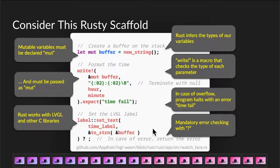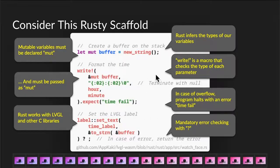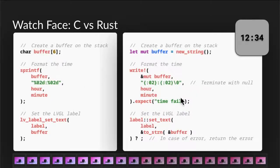Notice that we actually don't specify the types of variables. We don't say whether it's a char or a string. We just say let. That's because Rust infers the type of our variables. So this is actually safe. It will catch learners from falling into traps because there's no way that you can cause a buffer overflow problem — it just fails with an error. And if you compare the two versions of the code, the C and the Rust, to create this watch face, the code is actually quite similar. We don't need to specify the types of our variables — we just let Rust do it for us.